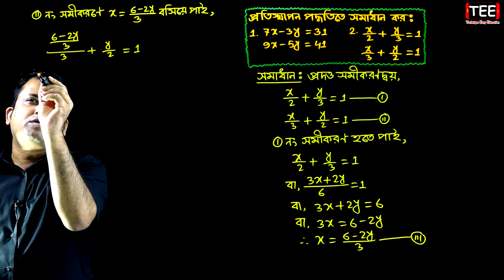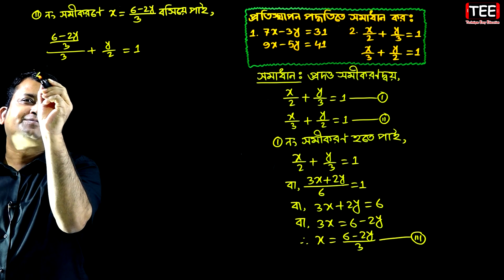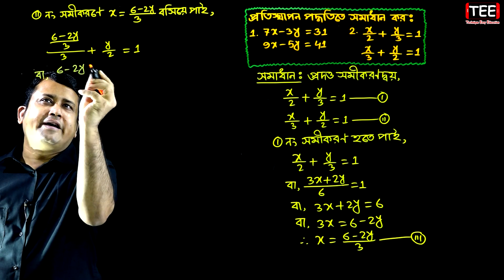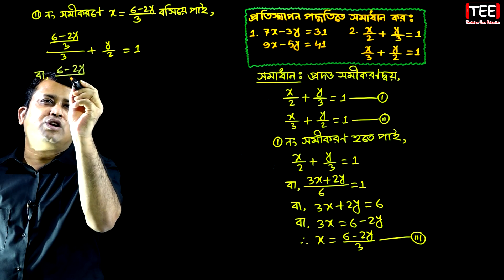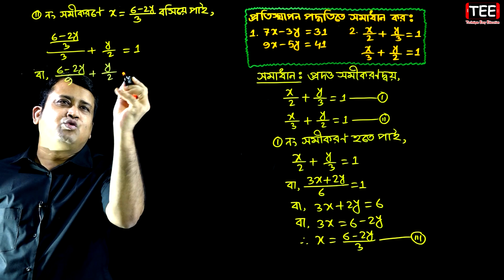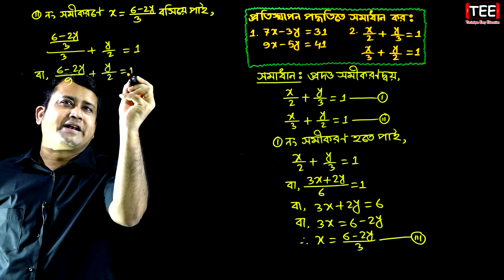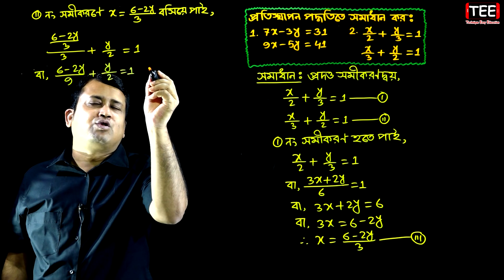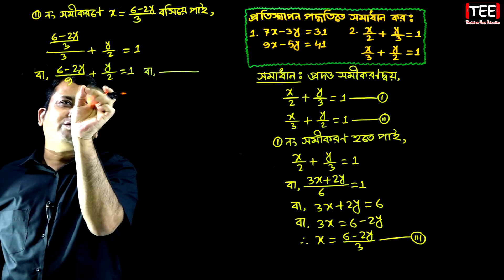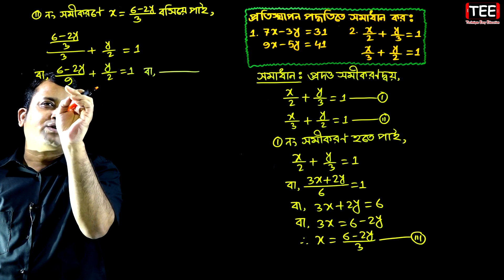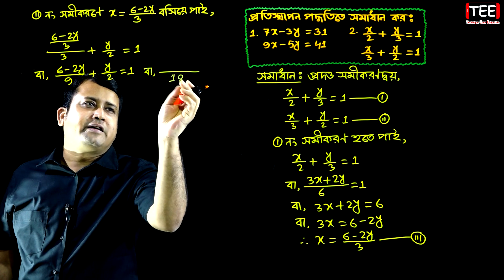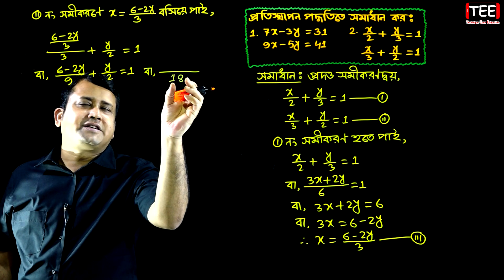When we do this — 6 minus 2y, 3 minus 3, 9 plus y by 2 equal to 1. If we do this — 8 minus 9.